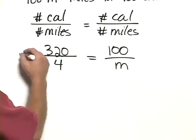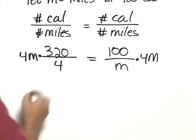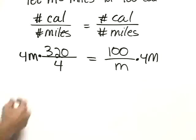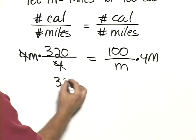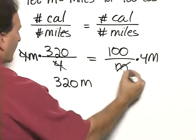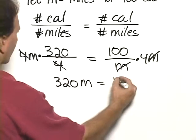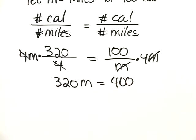We now multiply both sides by 4m, because that's the common denominator. We'll see that we can remove a factor of 1, the 4 over 4, multiplying leaves us the result 320m. On the right-hand side, we remove a factor of 1, the m over m, multiplying 100 times 4 gives us 400.